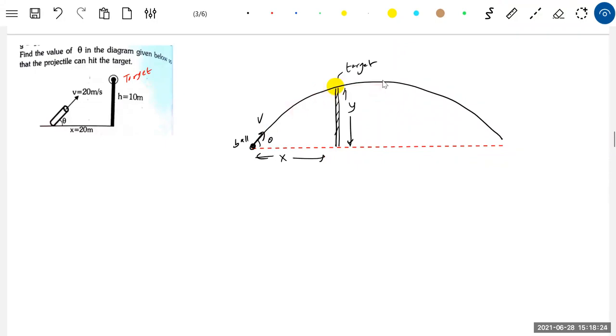What is the equation of projectile motion? y equals x tan theta minus g by 2 u square cos square theta.